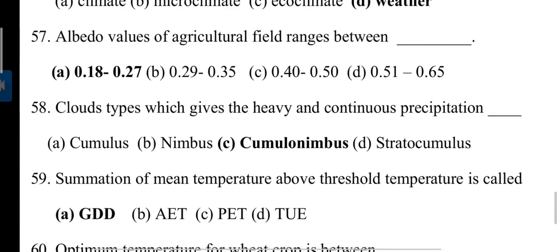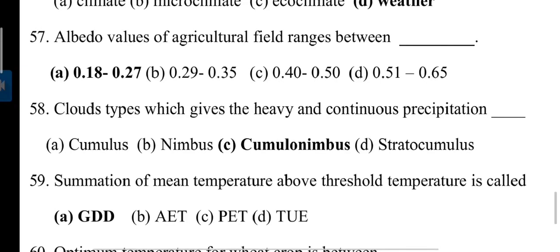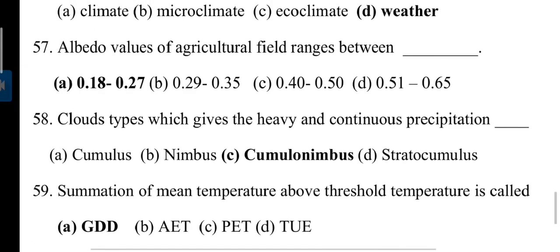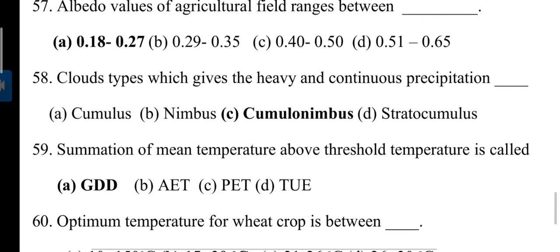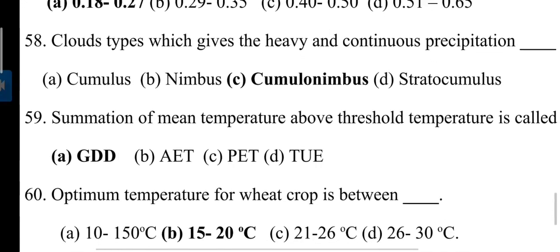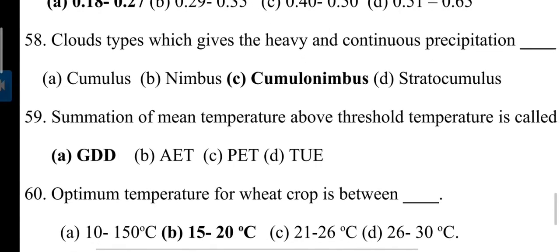Albedo values of agricultural field range between 0.18 to 0.27. Albedo is a ratio between incoming and outgoing solar radiation from any surface. Cloud type which gives heavy and continuous precipitation is cumulonimbus. WMO divided or classified clouds into 10 parts.